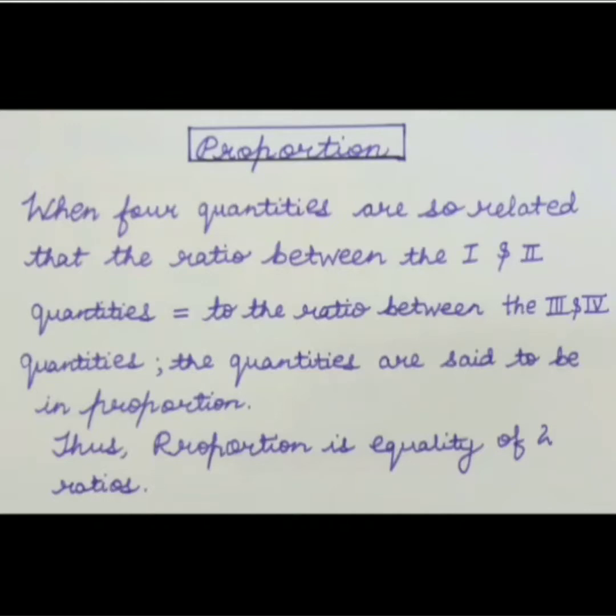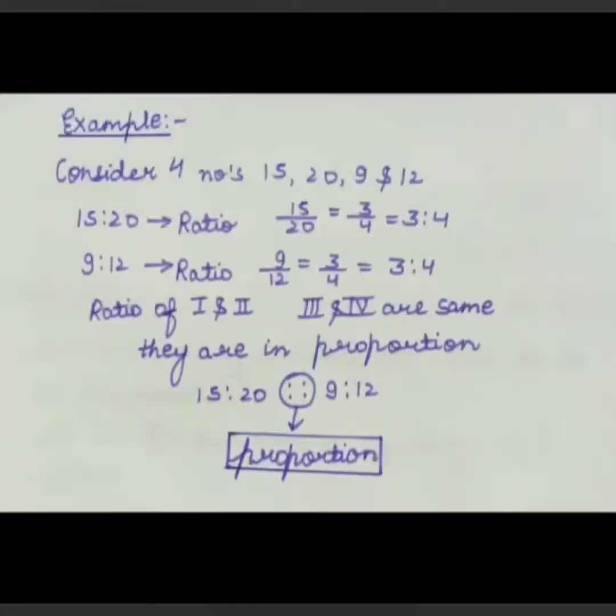When four quantities are so related that the ratio between the first and the second quantity is equal to the ratio between the third and the fourth quantity, the quantities are said to be in the proportion form.